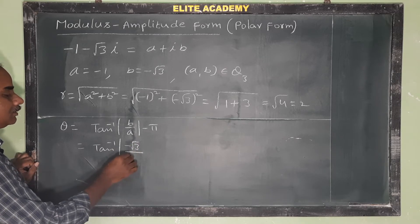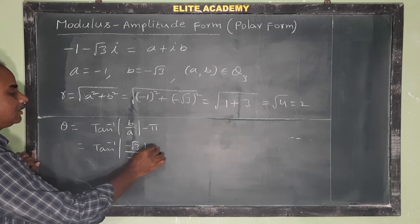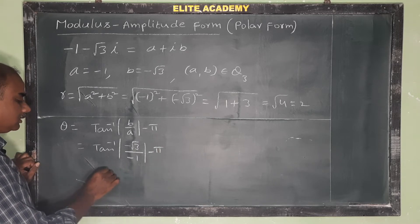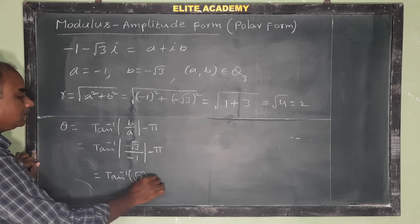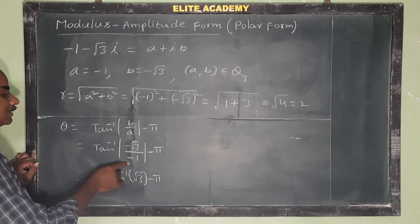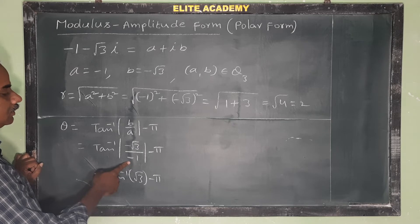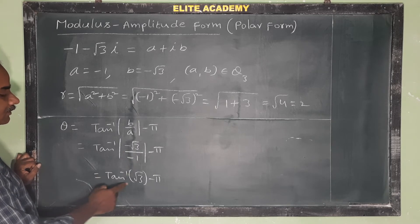This equals tan⁻¹(√3) - π, which simplifies to tan⁻¹(√3/1) - π.